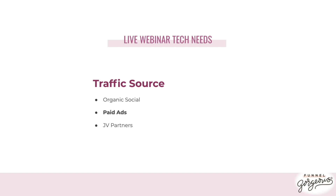JV partners — joint ventures — is another option. You partner with someone else to present your webinar to their audience. For example, if I sell funnel building services and a business coach has clients who'd love to hire me, I might partner with them and offer 50% of sales I make. They pitch it to their audience, maybe help answer questions, and we split the revenue.